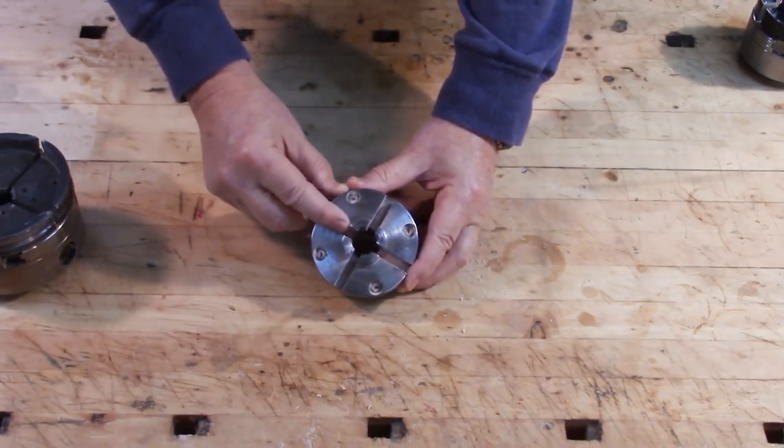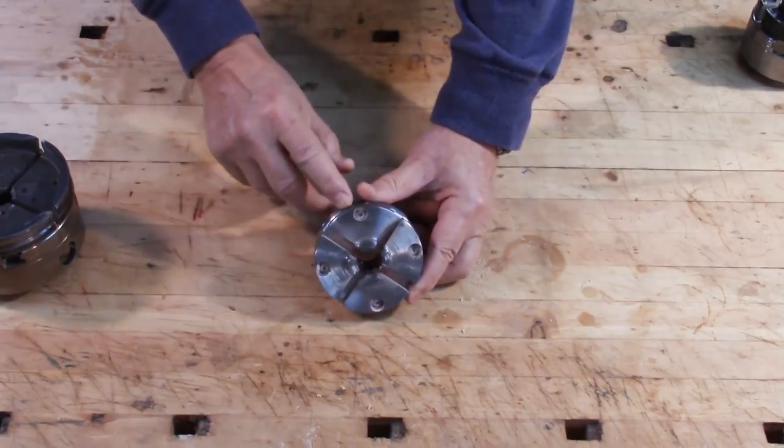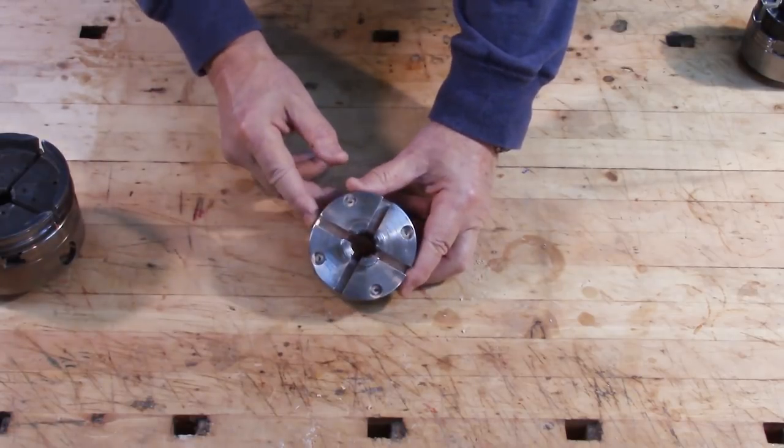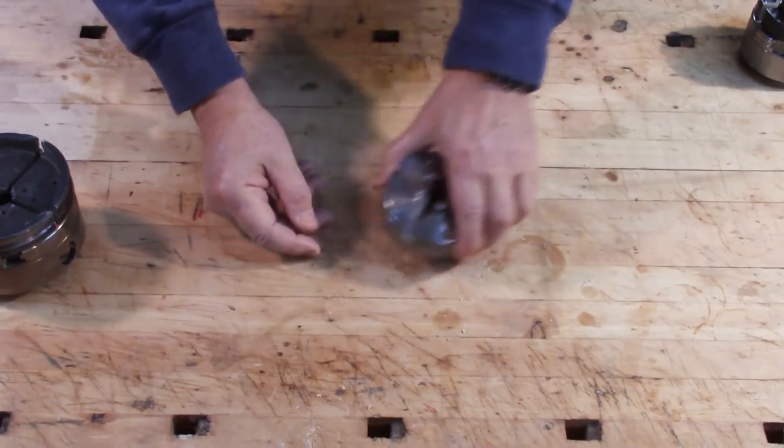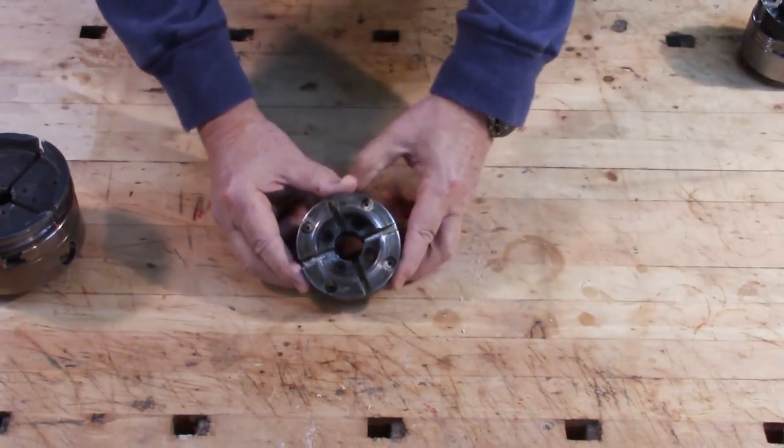We look at this one right here, you can see it's only got one set screw. Smaller chuck, smaller jaws, one set screw. Never had a problem with it, even though it's only got one screw. It's quite tight and the jaws are mounted in such a way on these slides that they're not going to come loose as long as they've got at least one screw in them.